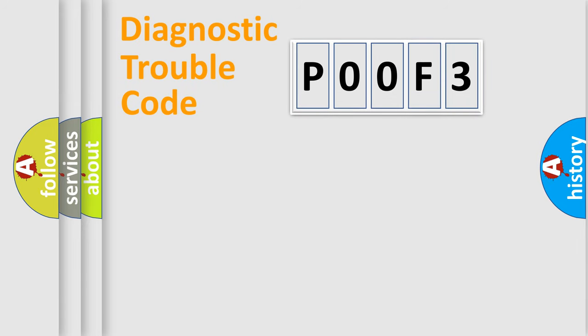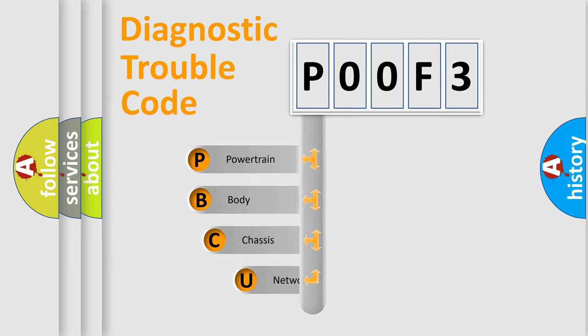First, let's look at the history of diagnostic fault code composition according to the OBD2 protocol, which is unified for all automakers since 2000. We divide the electric system of automobile into four basic units.